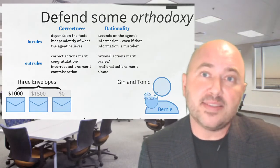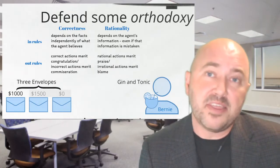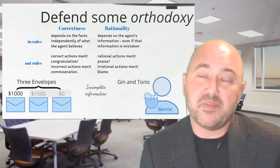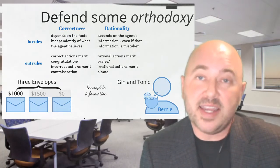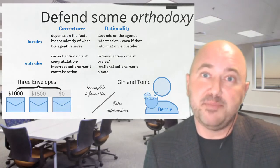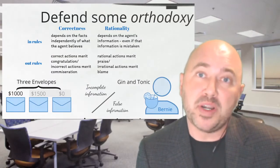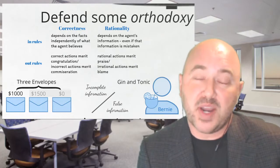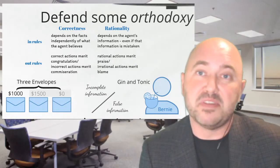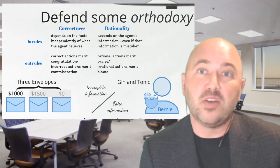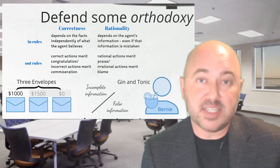So congratulations and commiseration go with correctness and incorrectness, while praise and blame go with rationality and irrationality. These two ways that our information can come apart from the facts are very different. In the three envelopes case, Amy's information is incomplete. In the gin and tonic case, Bernie's information is wrong. It's going to be important for the orthodox view that the agent's information relevant for rationality can include false stuff.